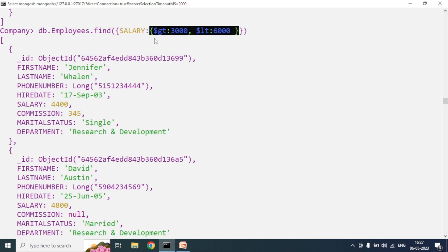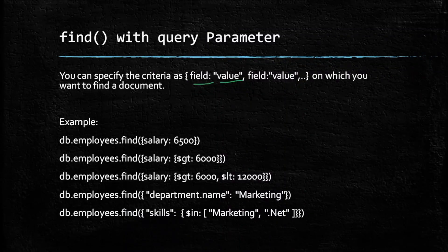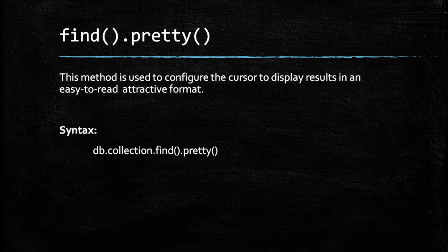Now we will move to the next slide to understand the pretty method in MongoDB. This method is used to configure the cursor to display results in an easy-to-read, attractive format. We simply use this method after the find method.